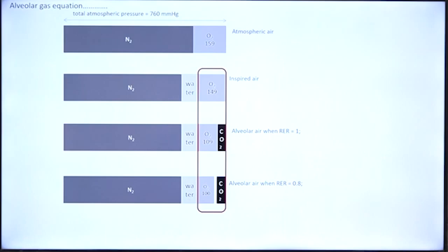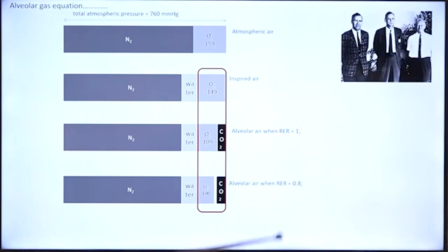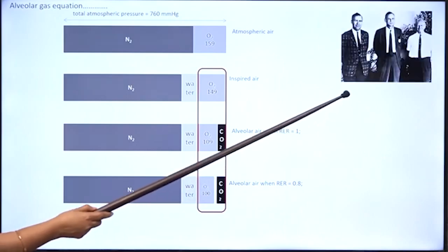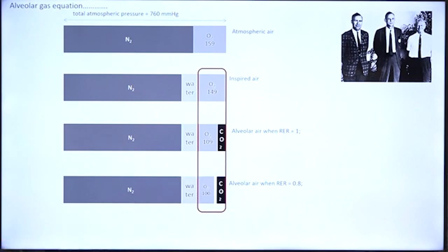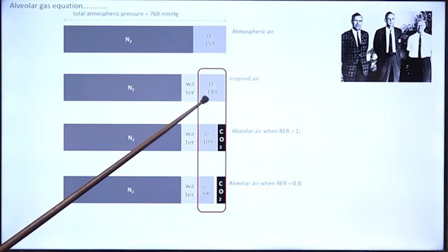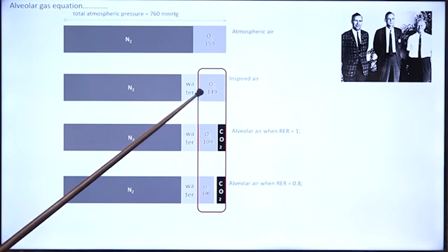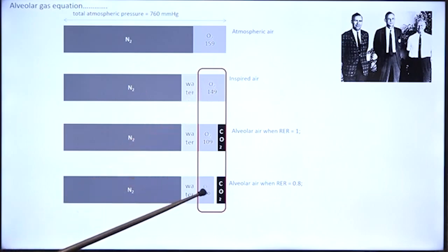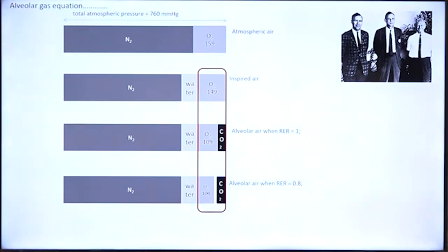The alveolar gas equation is a contribution by this illustrious trio of respiratory physiologists. They went on to describe the relationship between oxygen in the inspired air and oxygen and carbon dioxide in alveolar air. That is indeed the alveolar gas equation.